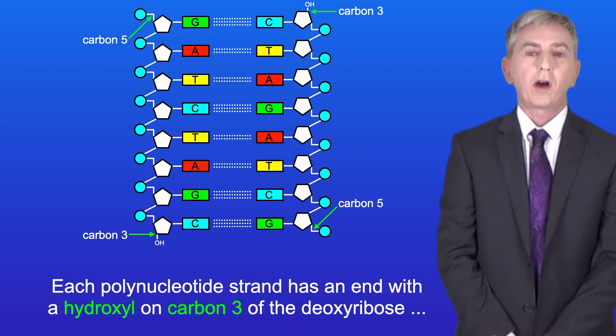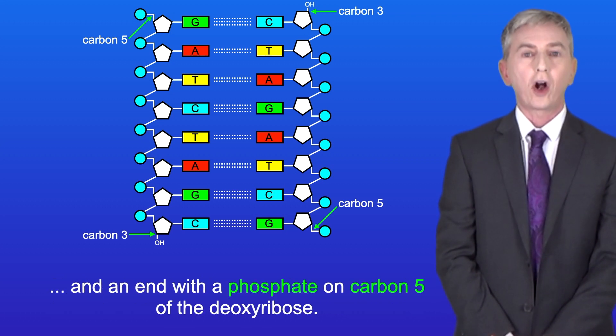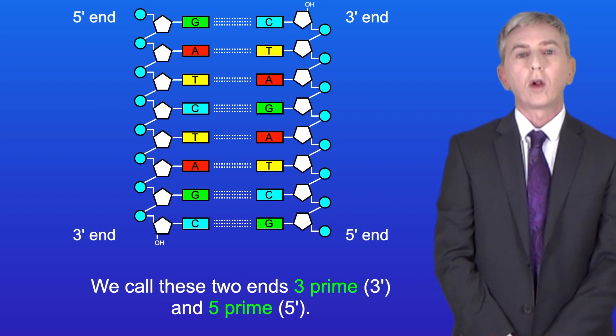Each polynucleotide strand has an end with a hydroxyl on carbon 3 of the deoxyribose and an end with a phosphate on carbon 5 of the deoxyribose. We call these two ends 3' and 5'.